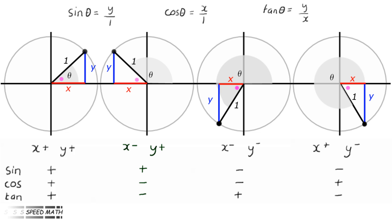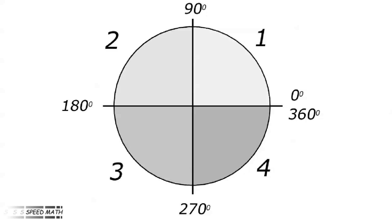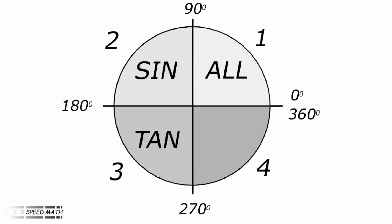Our table of results for sine, cosine and tangent is now complete, but it can be summarised in a simple, easy to remember diagram. As we go anticlockwise through all four quadrants, we have All, Sine, Tan, Cos — indicating when the function is positive. In the first quadrant, sine, cosine and tangent are all positive. In the second quadrant, only the sine function is positive. In the third quadrant, only the tangent function is positive. And in the fourth quadrant, only the cosine function is positive.